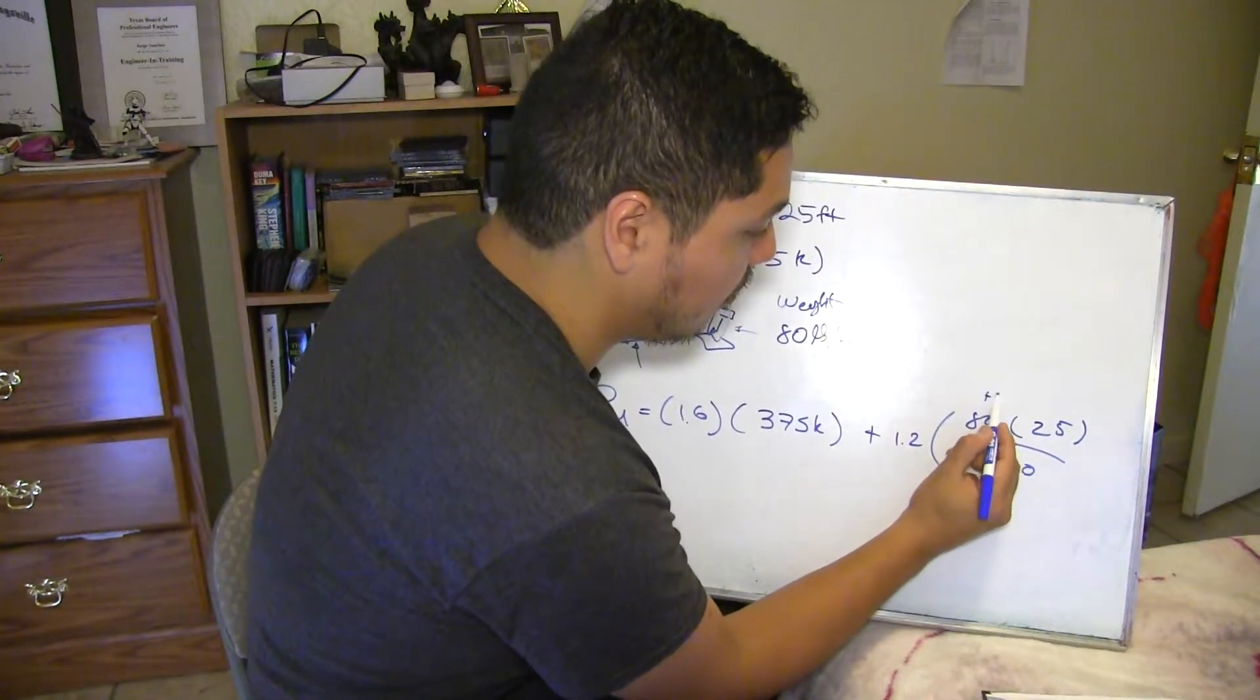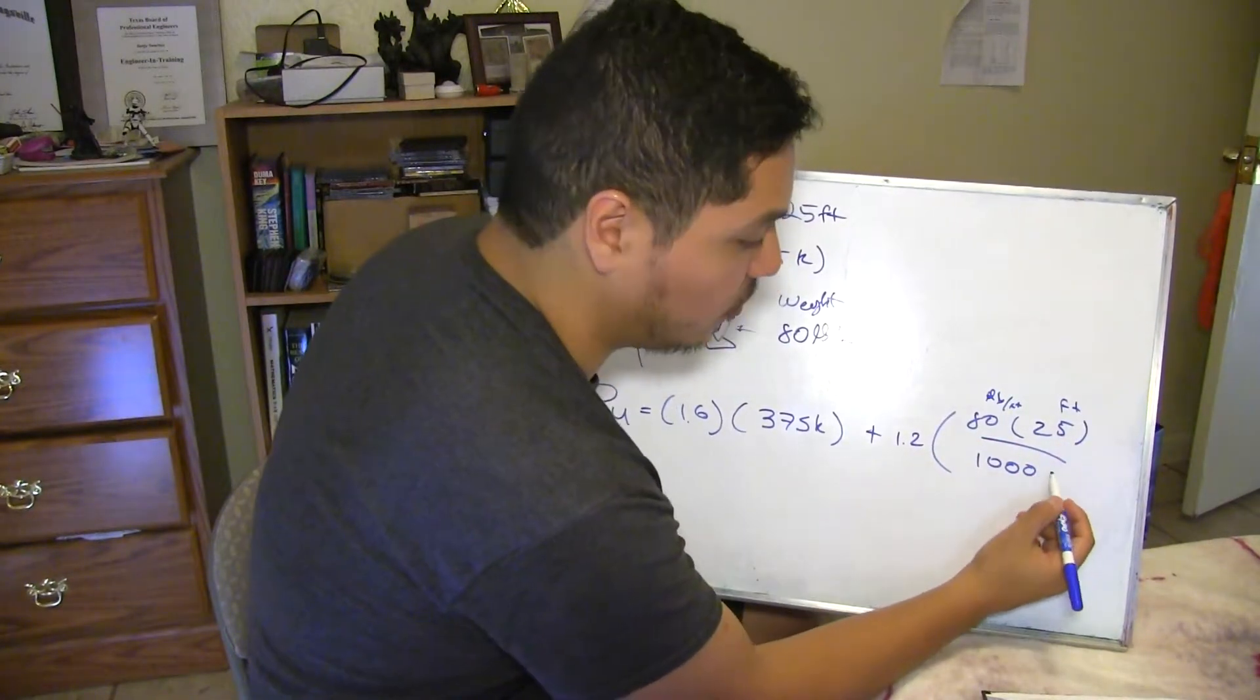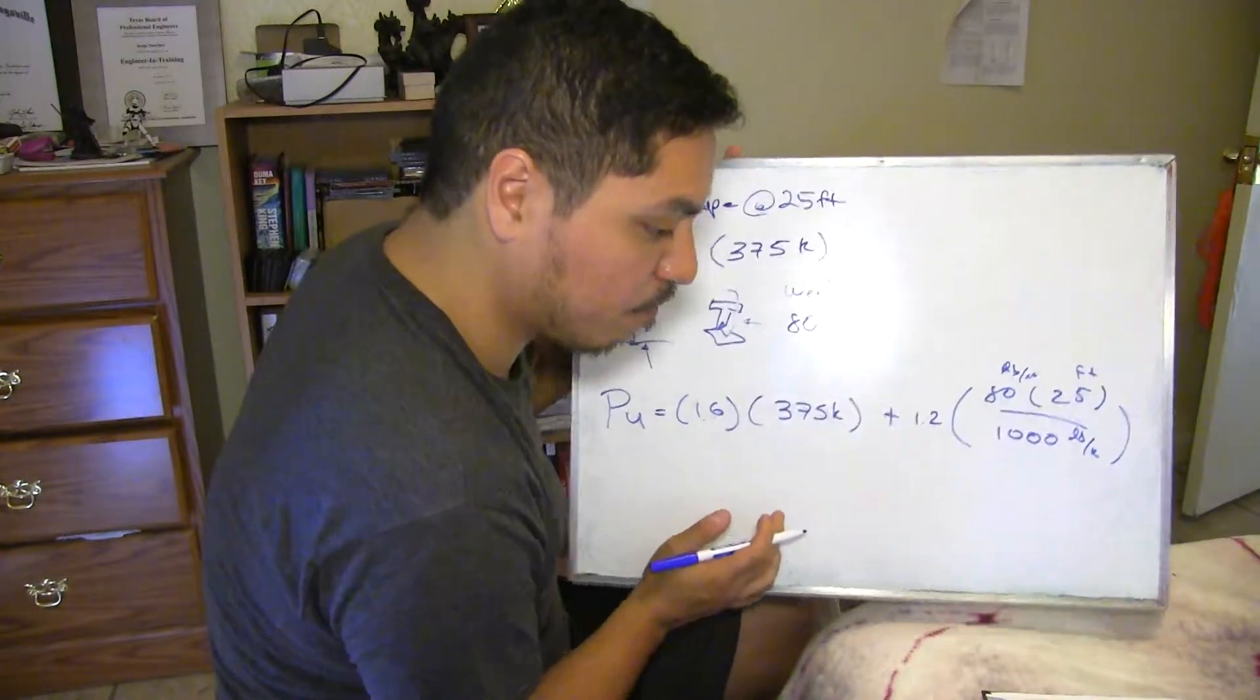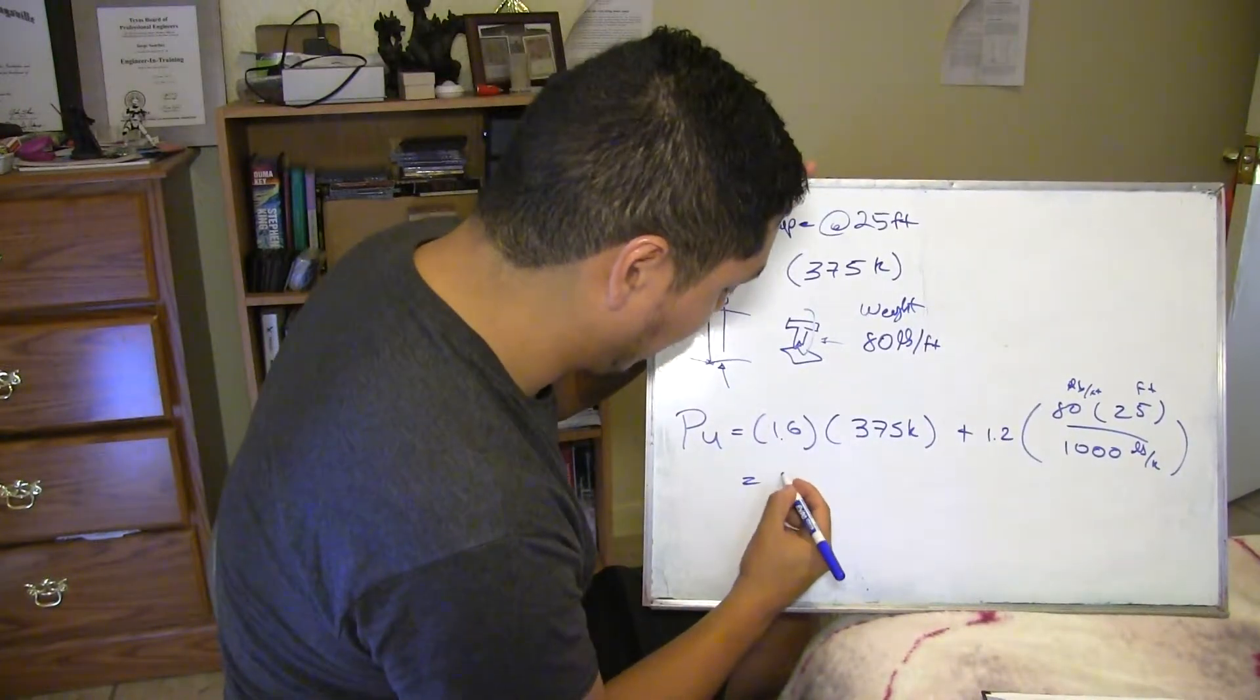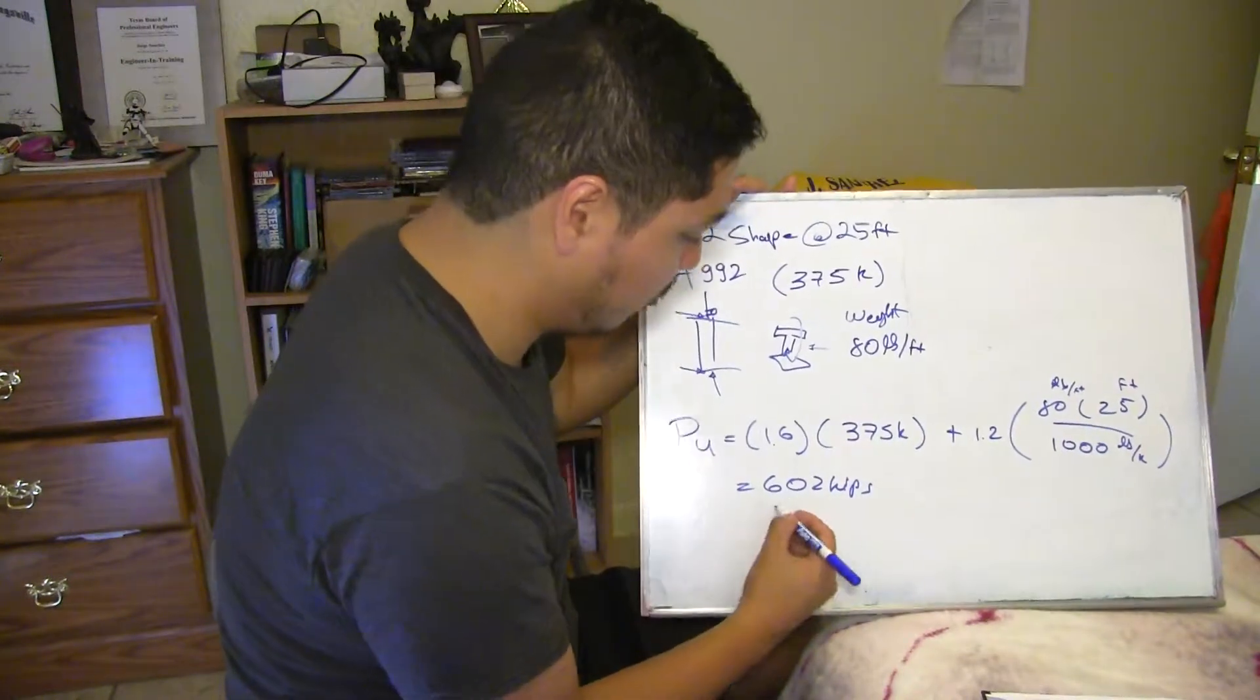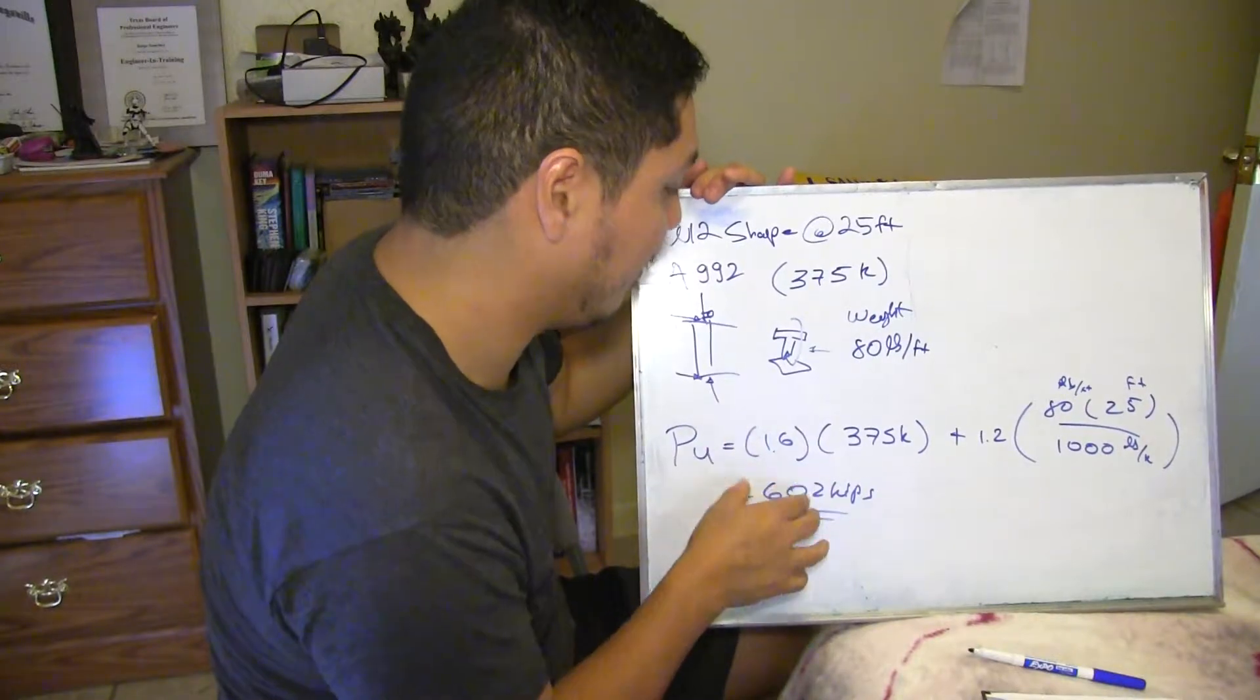And then you're going to be using a thousand for converting. This is in pounds per feet and this is in feet, and you want it in pounds per kip. So you're going to be basically converting it to kips. And you're going to be getting a load of 602 kips. So basically this is what you have on the beam. So you need to find a section that can take this load.